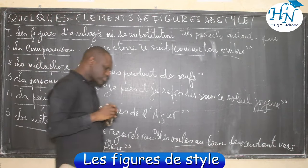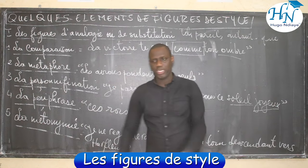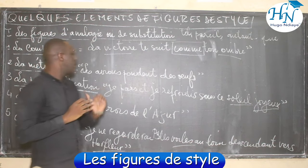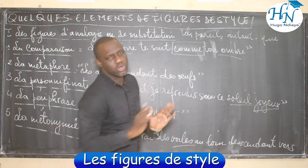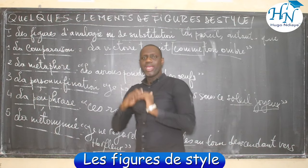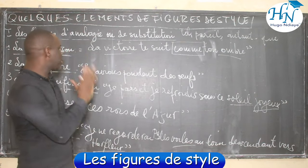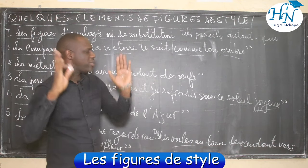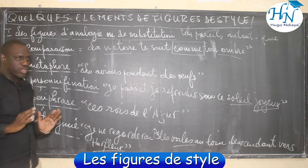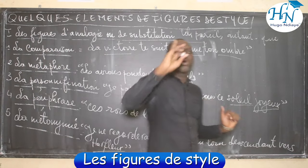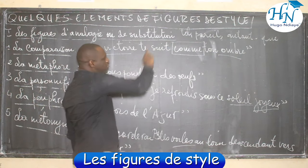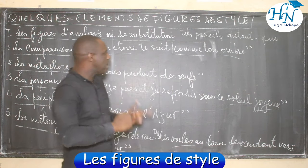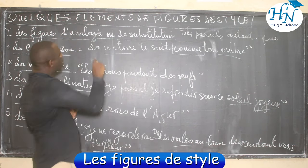Où se trouve le problème ? L'élève peut réciter : la comparaison consiste à comparer deux éléments avec la présence d'un outil comparatif ; la personnification consiste à attribuer les caractéristiques de l'être humain à un animal ou bien à une chose ; la périphrase consiste à mettre en valeur plusieurs éléments pour n'en traduire qu'un seul ; la métonymie c'est le contenant pour le contenu ou vice-versa. Mais le problème c'est quand on lui demande d'identifier les figures de style et de donner l'effet produit par chacune d'elles.